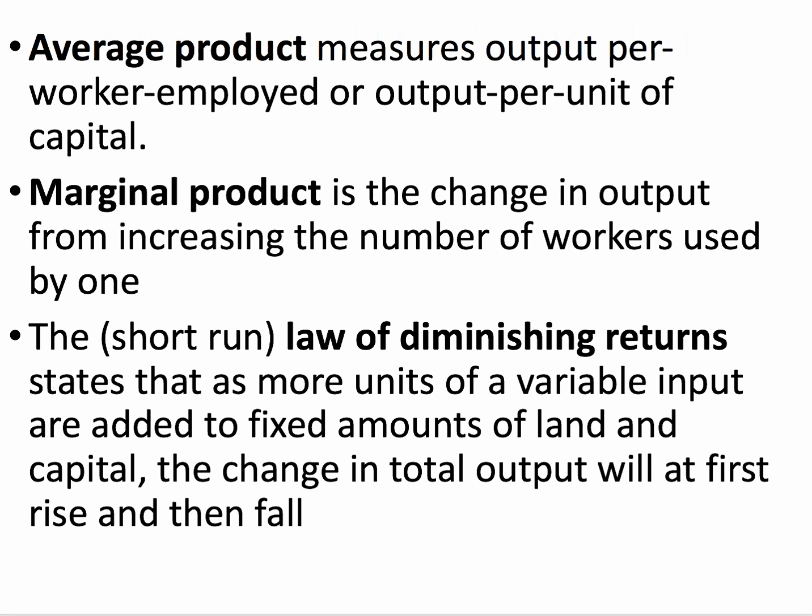The key is what happens to the productivity of the extra units of labour that we bring in. Average product measures output per worker, or output per unit of capital, but in this case it'll be output per worker. Marginal product is the change in output from increasing the number of workers just by one.